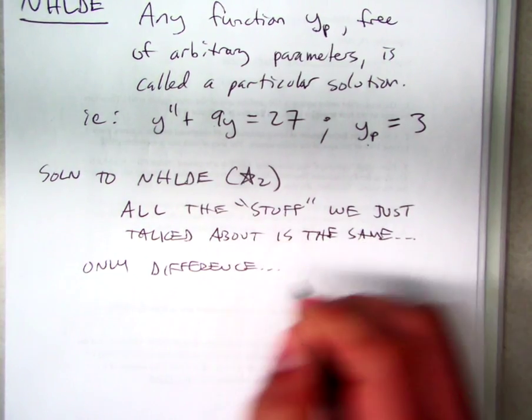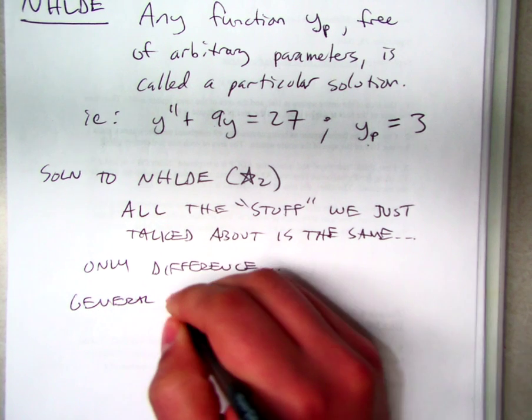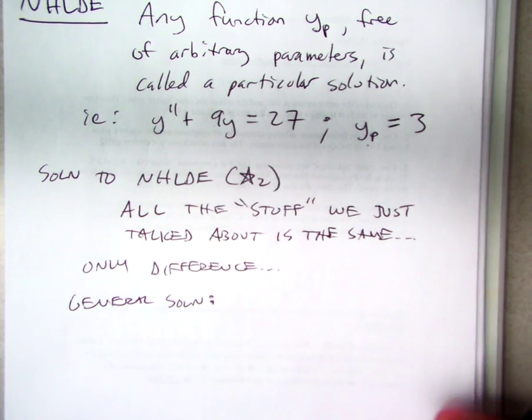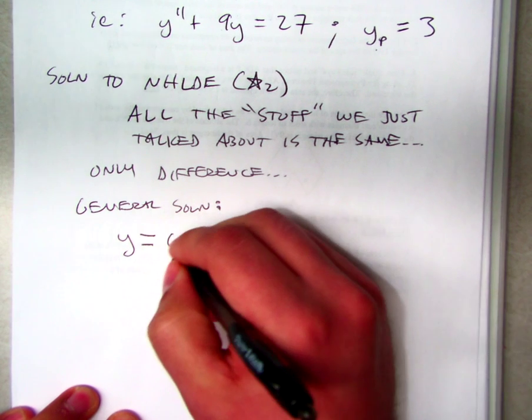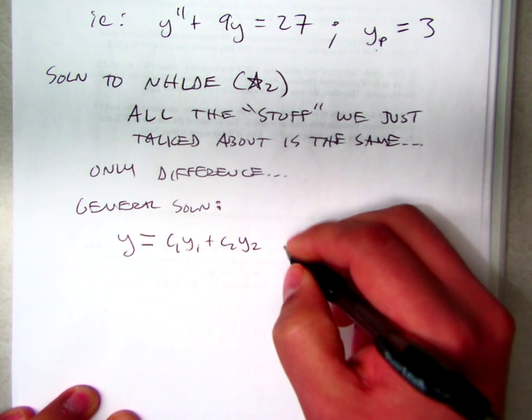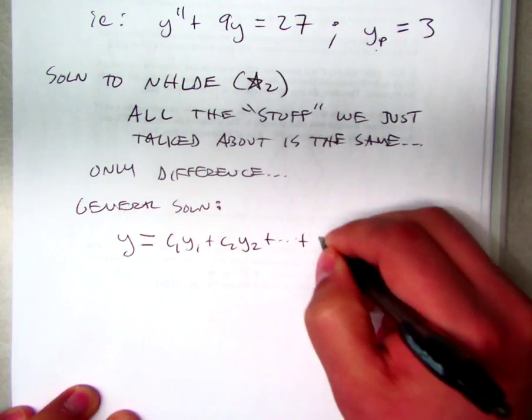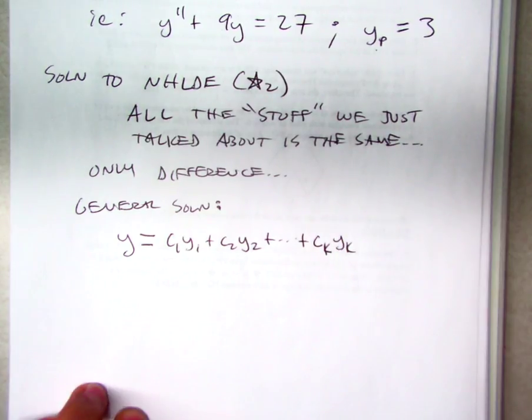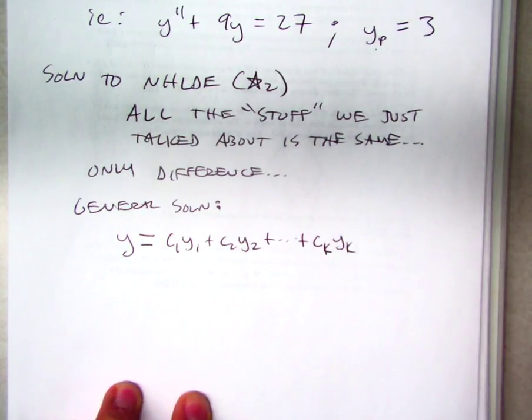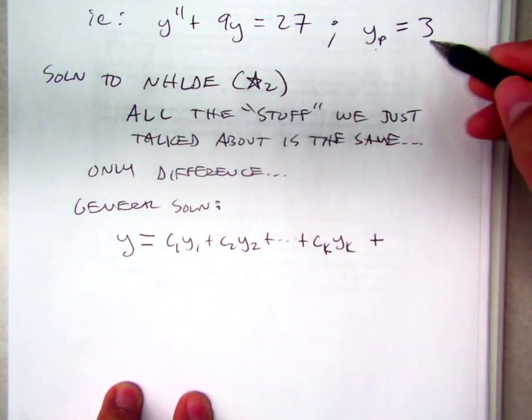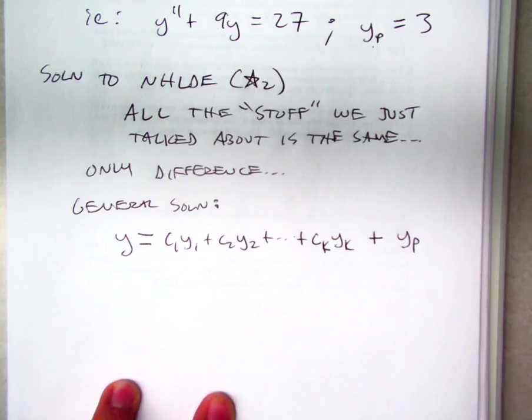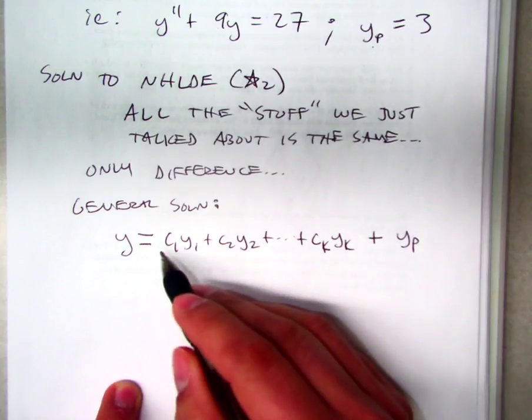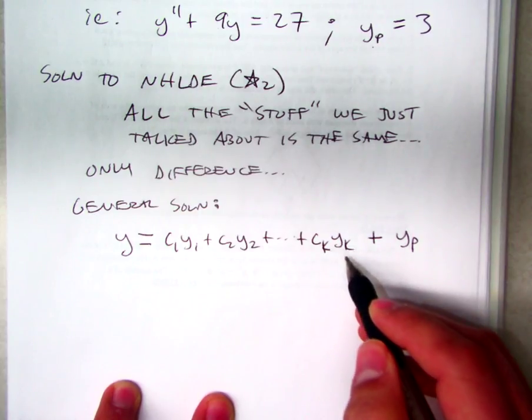Is that the general solution is going to look like this. Y equals C1Y1 plus C2Y2 and so on. Down to whatever order we have. Plus the particular solution to the non-homogeneous linear differential equation.